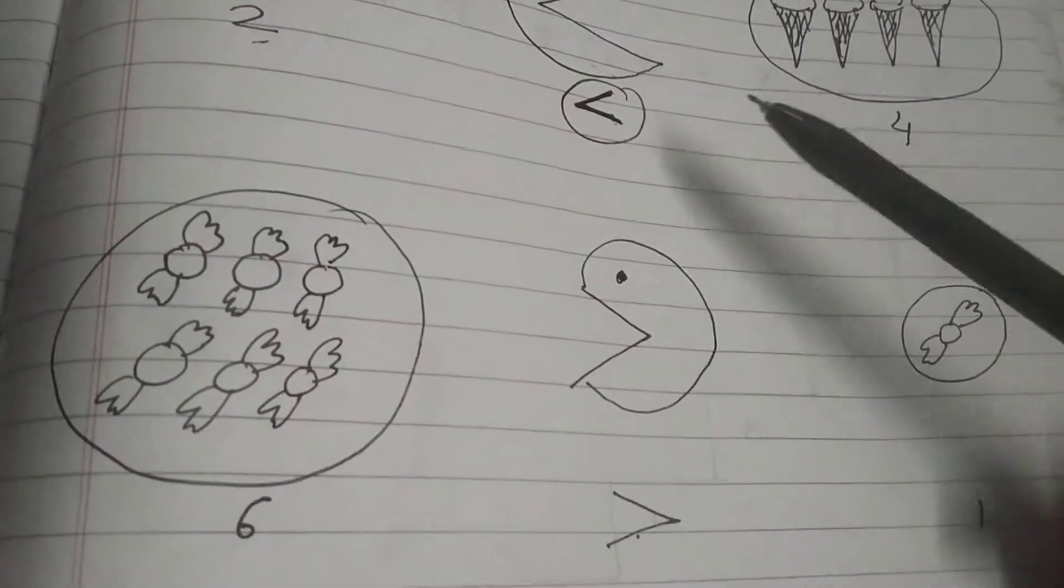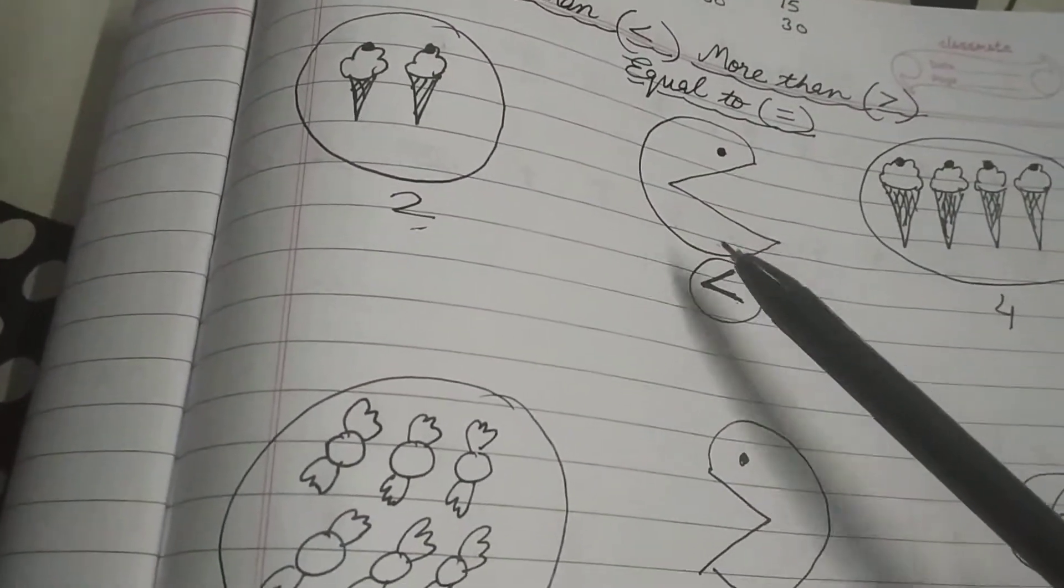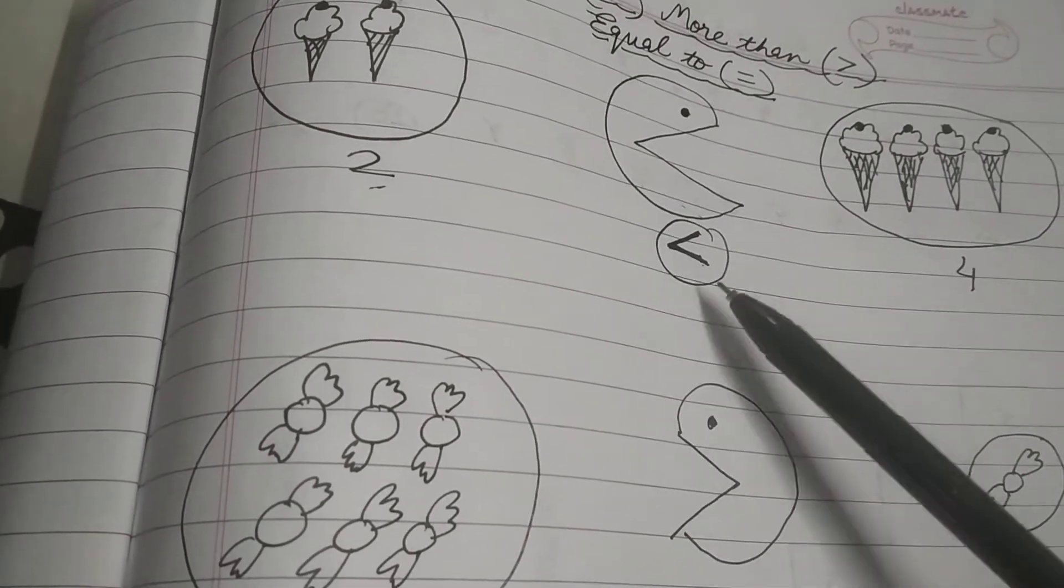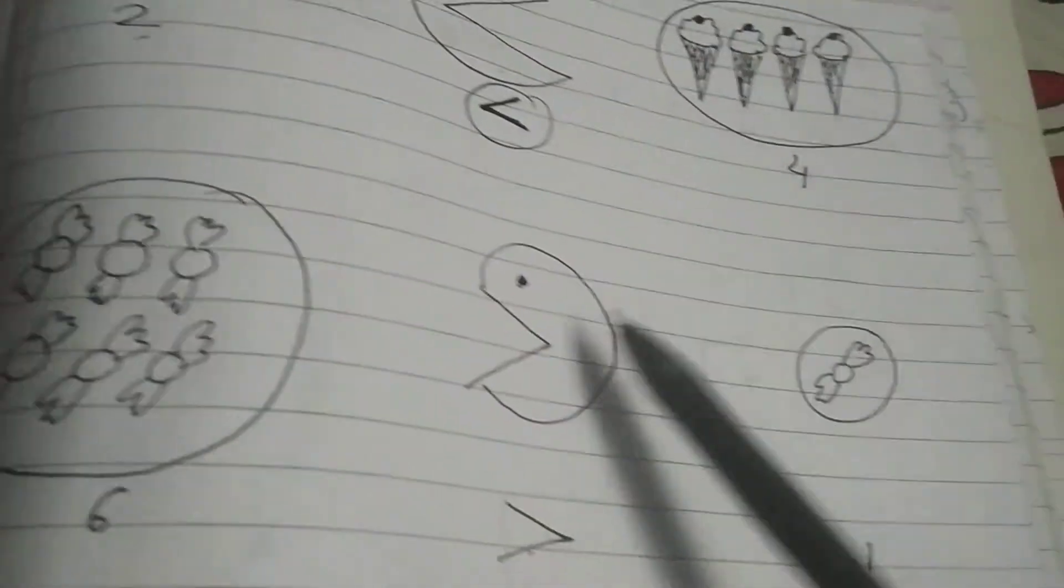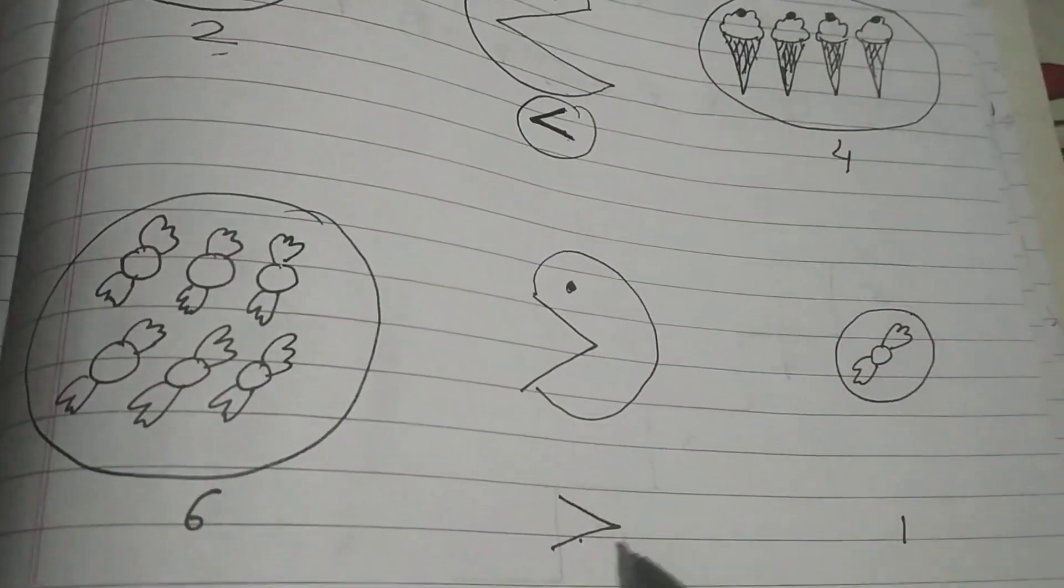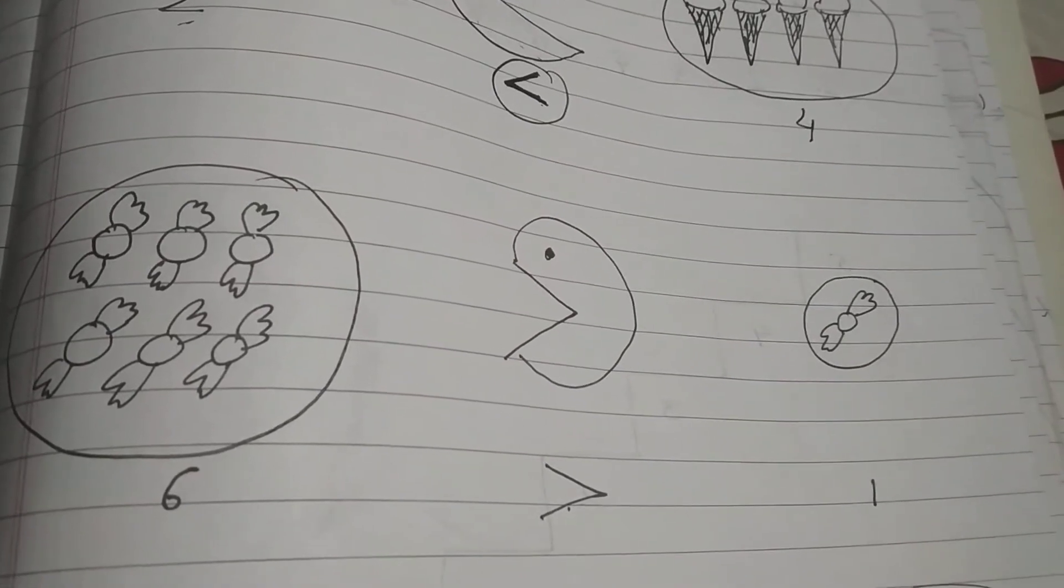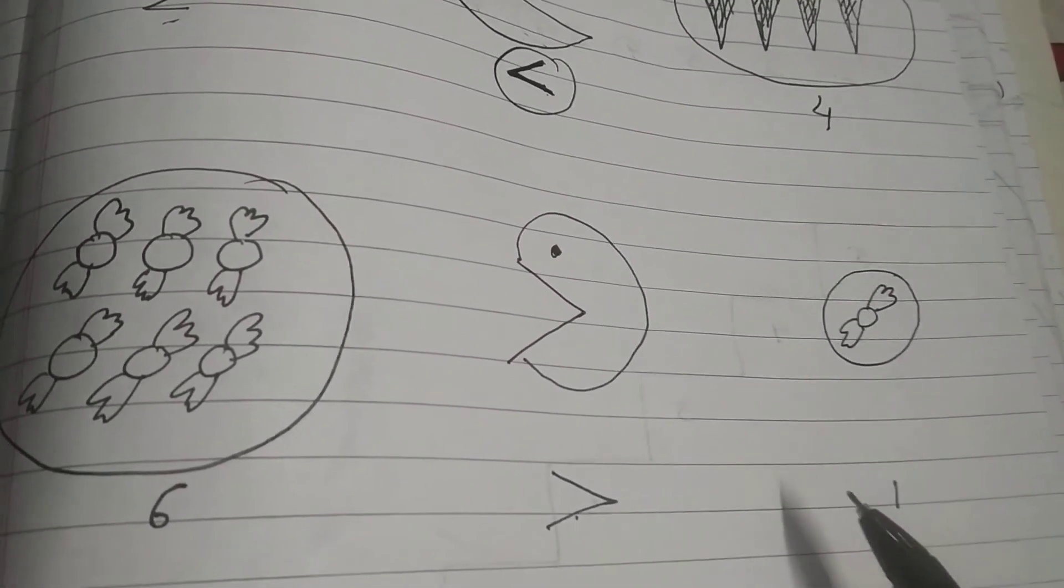Now compare the two symbols. This is less than. Less than mein kya hai? Chota number pehle aare hai, bada number baad mein aare hai. 2 is less than 4. This is greater than. Ye symbol ulta ho jaega. Ab 6 is greater than 1. Ye haan peh bada number pehle aare hai aur chota number baad mein aare hai.